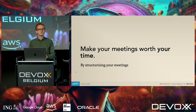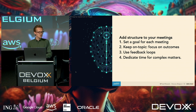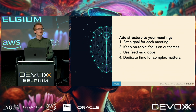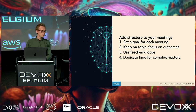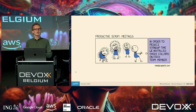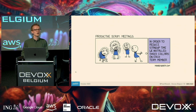Another approach is to make meetings worth your time. Add structure: set a goal for each meeting, keep on topic, and focus on outcomes. If you set a goal, you can easily tell colleagues when they go off track. Use feedback loops — a few years back I asked after every meeting 'was this worth our time?' If someone said no, we had something to discuss: how can we improve, or should we skip this meeting altogether? Dedicate time for complex matters — if you're building a nuclear power plant, reserve time for deciding how to build that piece of software.